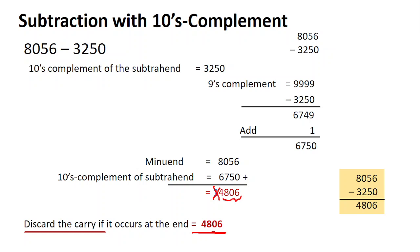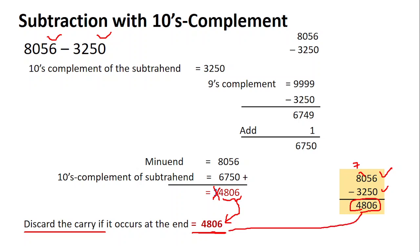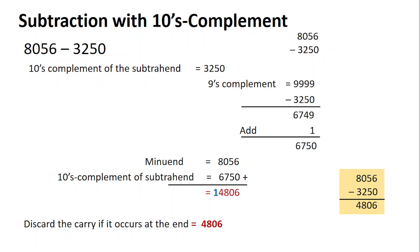After discarding the carry, write the answer as 4806. To verify in the examination, manually subtract: 8056 minus 3250. Six minus zero is six, five minus five is zero, carry — ten minus two is eight, seven minus three is four. You get 4806 — the same answer. Whether you use tens complement or any other method, the answer must match the ordinary arithmetic subtraction.